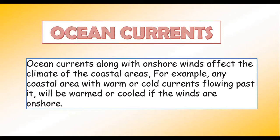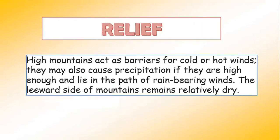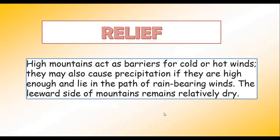Finally, we come back to relief features — what we learned in the last chapter — and how relief features play a major role in determining the climate of a place. High mountains become barriers for cold or hot winds and also cause precipitation. If they are high enough and lie in the path of the rain-bearing winds, they will cause precipitation. The leeward side of the mountain will always remain dry.